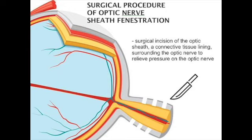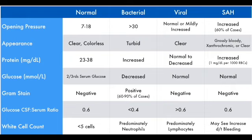Classic CSF findings: MS shows high IgG oligoclonal bands. Guillain-Barré shows high protein with normal white blood cells (albuminocytologic dissociation). Bacterial meningitis shows high protein, increased WBCs (primarily PMNs), and decreased glucose. Viral/aseptic meningitis shows normal glucose and increased WBCs predominantly lymphocytes. Fungal or TB meningitis shows decreased glucose and increased lymphocytic WBCs. Idiopathic intracranial hypertension shows increased CSF pressure, otherwise normal. Subarachnoid hemorrhage importantly shows xanthochromia (tan-colored CSF due to blood or bilirubin) and blood in the CSF.